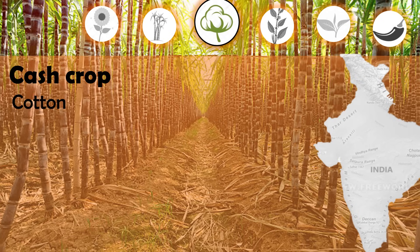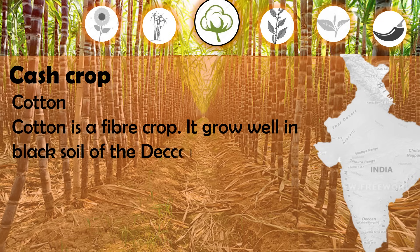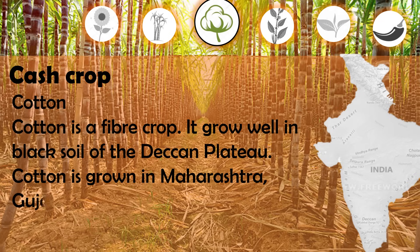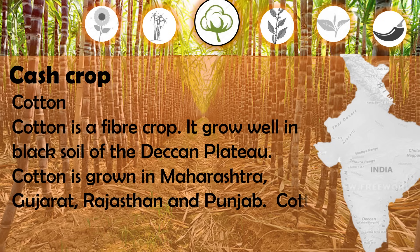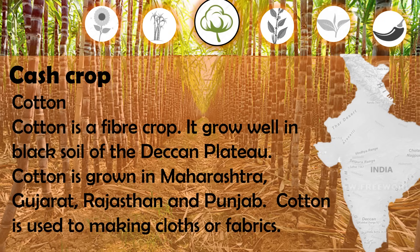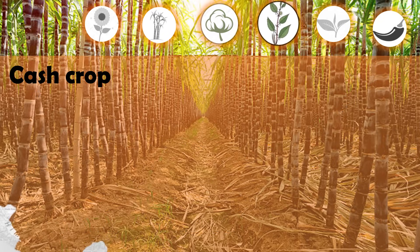Cotton is a fiber crop. It grows well in the black soil of the Deccan plateau. Cotton is grown in Maharashtra, Gujarat, Rajasthan, and Punjab. Cotton is used to make clothes or fabrics.